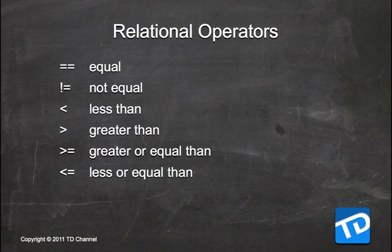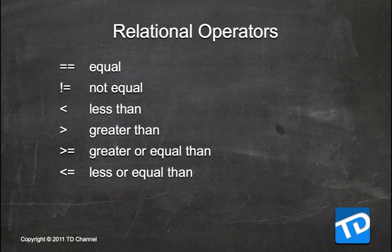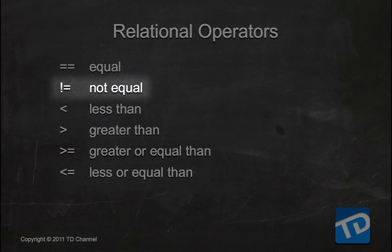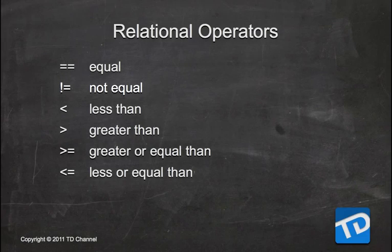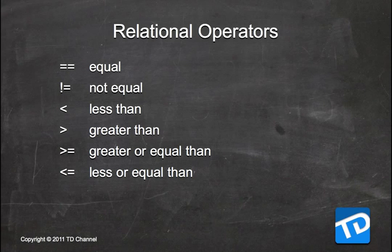To be able to perform control flow, you're going to need relational operators. These operators allow you to compare values so that you can make decisions based on the outcome. For example, two equals signs together means you're comparing for equality; an exclamation point next to an equal sign tests for not-equality. And then you have less than, greater than, greater than or equal, and less than or equal — these are the basic building blocks of the tests you'll do to control the flow of your program.